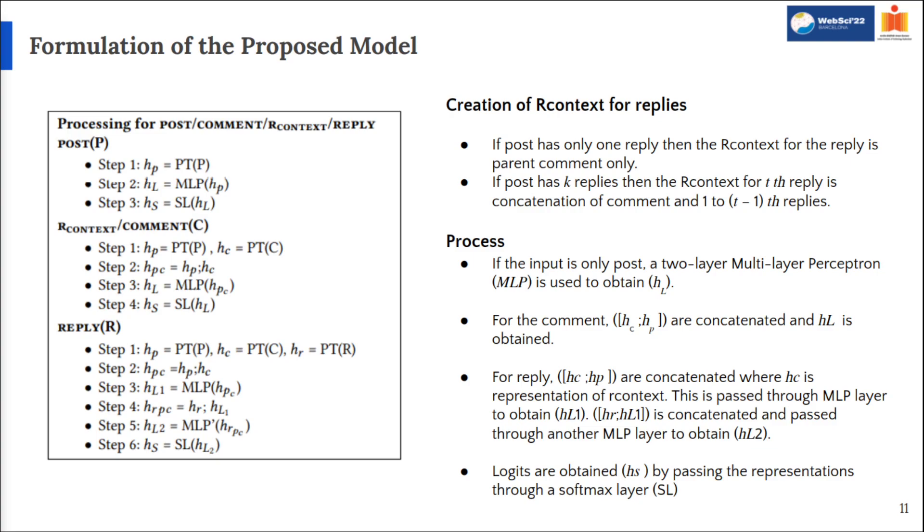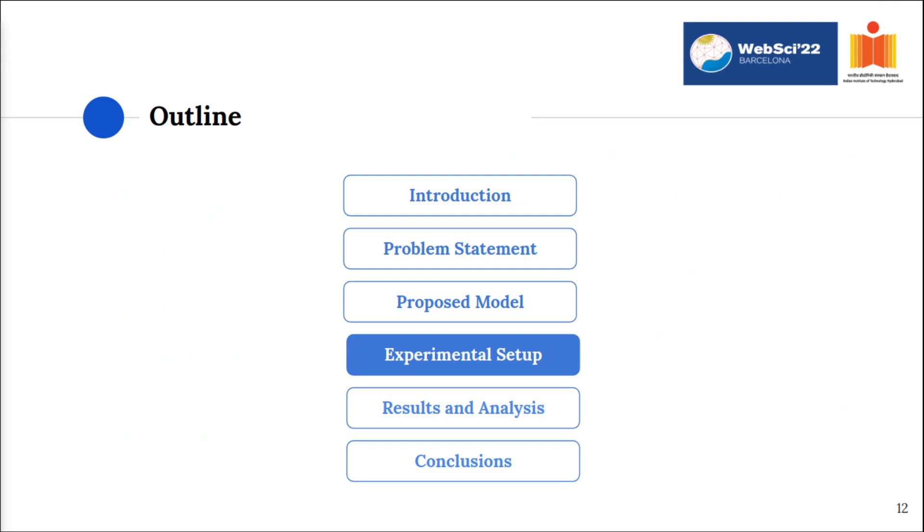The process is simple. We obtain the contextual representations of the comment, post and reply. If the input is only post, we directly pass it to the classification head to get the predictions. If the input is comment, we concatenate the post earlier and pass the concatenated representations to the classification head. Whereas, if the input is reply, we concatenate the context and post, project it to a smaller dimension, then followed by the concatenation of the reply to pass it through the classification head and get the predictions.